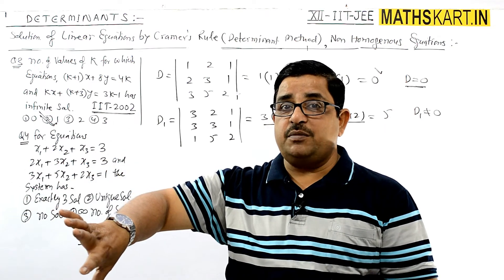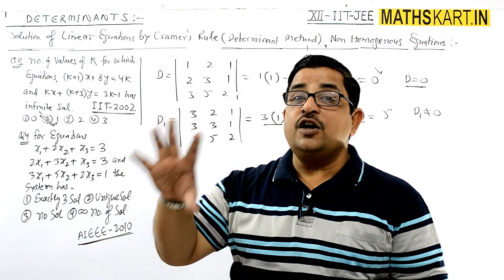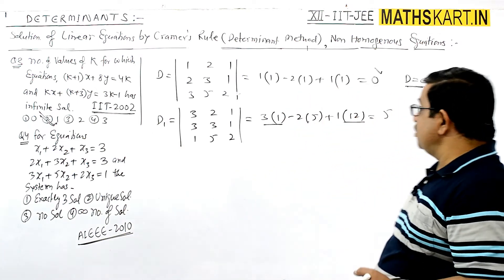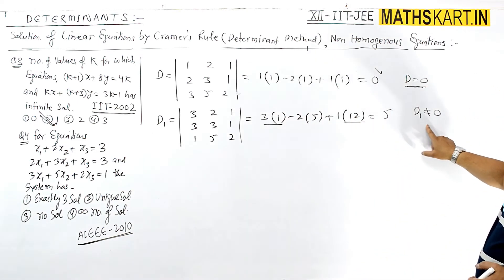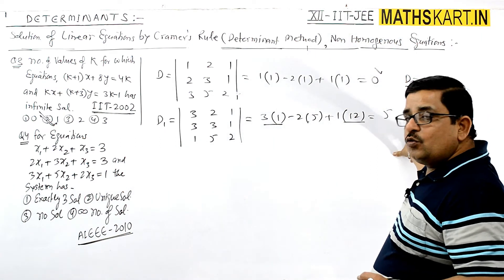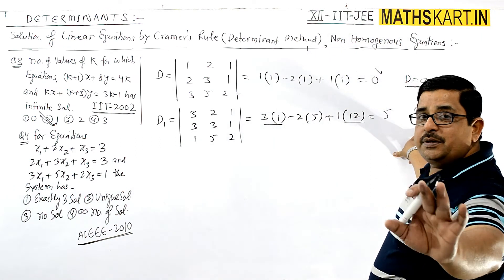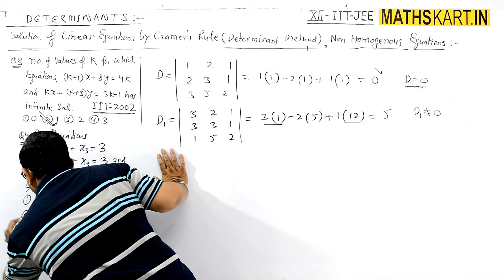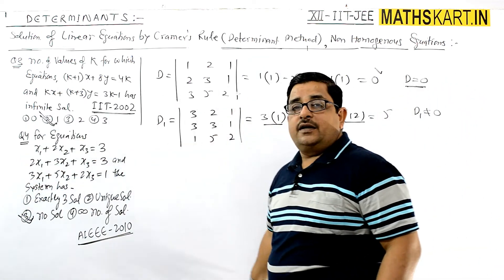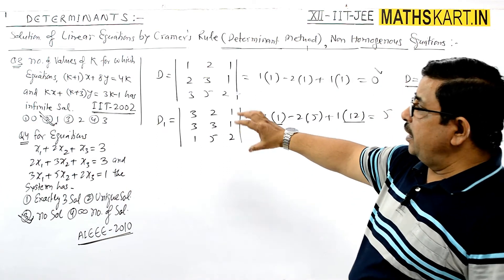We already have our answer: this equation system has no solution. Since D = 0 but D1 ≠ 0, the system has no solution. Therefore, option three is correct.